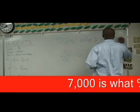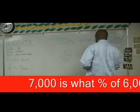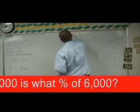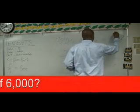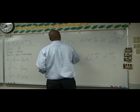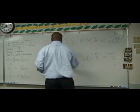So, 7,000 would be your part, right? You got it? And then 6,000 would be your base, so you will divide your 7,000 by 6,000.